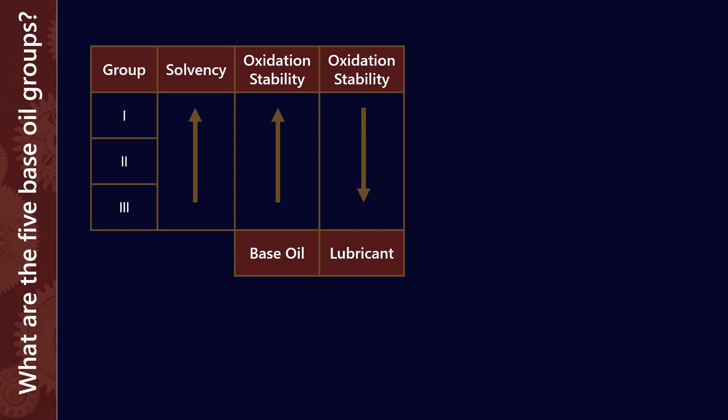However, when you create a finished lubricant, we put antioxidant additives into the finished lubricant, and they work better in conjunction with a group 2 or group 3. So, as a result, the finished lubricant of a group 2 or 3 has more oxidation stability than a group 1. So, that's a little one that's a little bit counterintuitive.